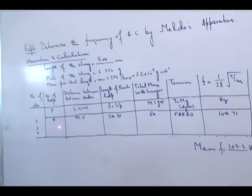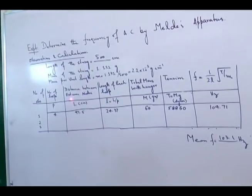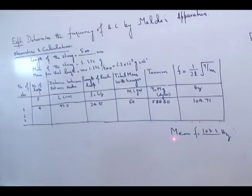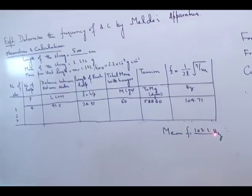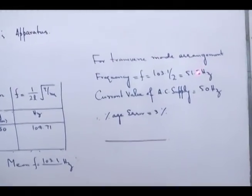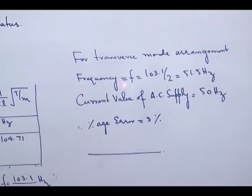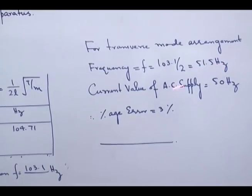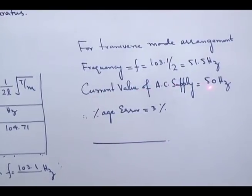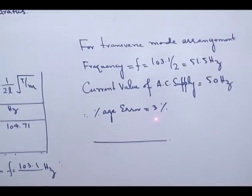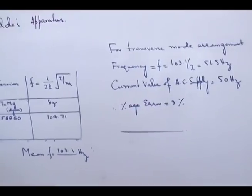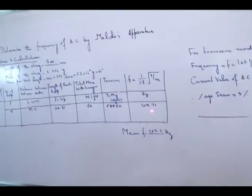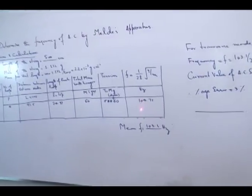For the second and third observations, you can increase the tension or change the length of the string to take two or three observations, then find the mean frequency. The mean frequency was 103.1. For the transverse mode, the frequency of the alternating current equals 103.1 divided by 2, giving 51.5 Hz. The standard value of AC frequency is 50 Hz, so the percentage error is 3.0%.